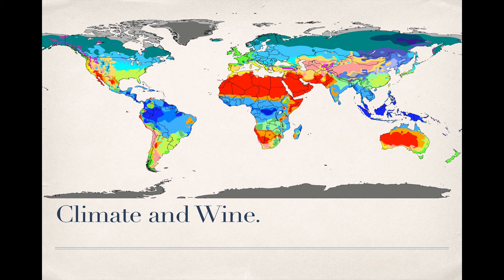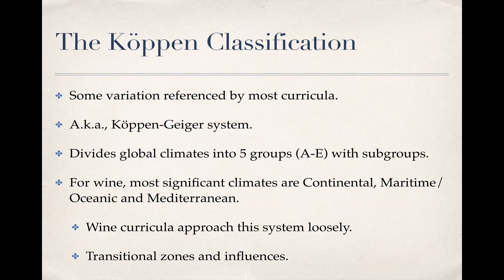There are complex issues involved in all of this that we can go into in subsequent casts, but for now a brief introduction to climate and wine seems in order. Most discussions, including those for the various wine education and certification curricula, that reference climate when talking about grape growing, do so in terms of the Köppen climate classification system, developed by Vladimir Köppen, a Russian scientist of German heritage in the late 1800s.